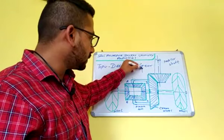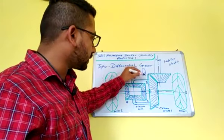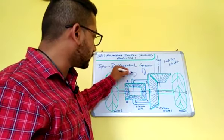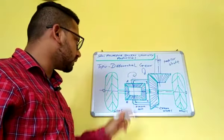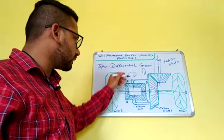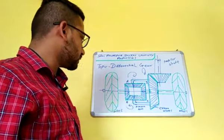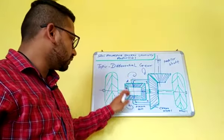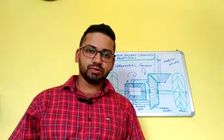This is the rotation of the crown wheel. You can see how it rotates — both are different. These are the small gears which we call pinion gears.